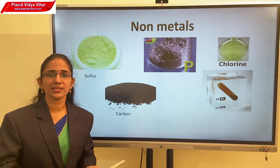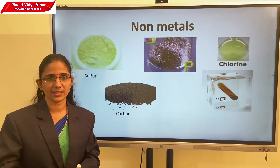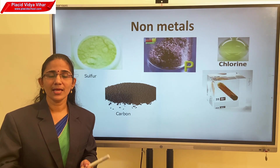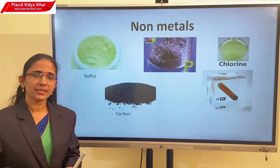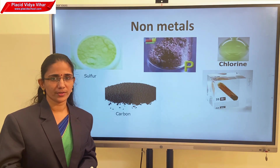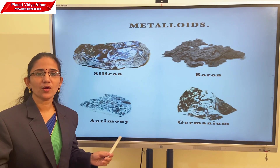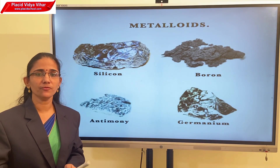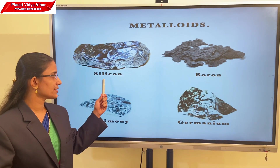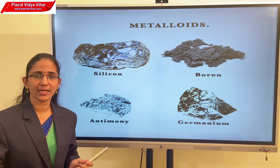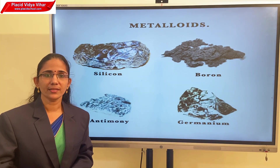Examples of solid non-metals are carbon, sulfur, and phosphorus. Gaseous non-metals include chlorine, oxygen, hydrogen, etc. Non-metals show entirely different properties from metals — their physical and chemical properties are entirely different. Metalloids show the properties of both metals and non-metals. Examples of metalloids are silicon, boron, germanium, and antimony.